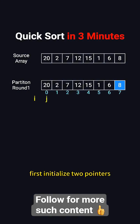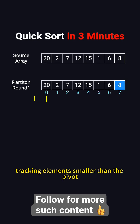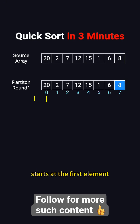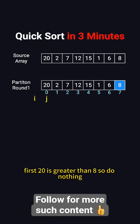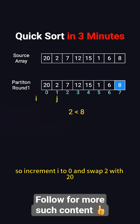First, initialize two pointers. Pointer i starts at minus 1, tracking elements smaller than the pivot, and pointer j starts at the first element and compares each to the pivot. Now process each element. First, 20 is greater than 8, so do nothing. 2 is smaller than 8, so increment i to 0, and swap 2 with 20.